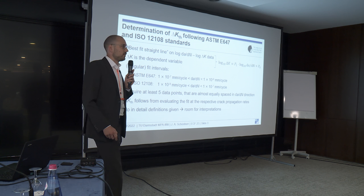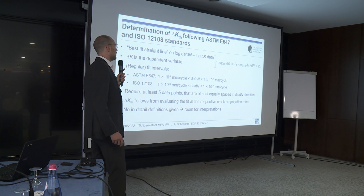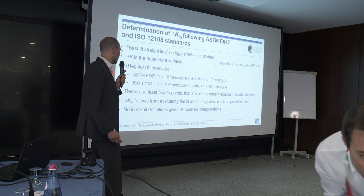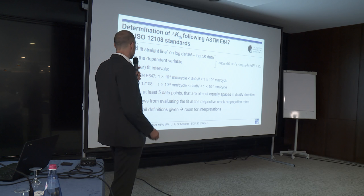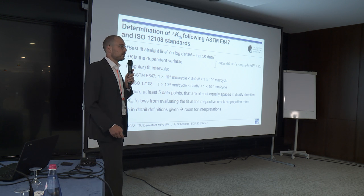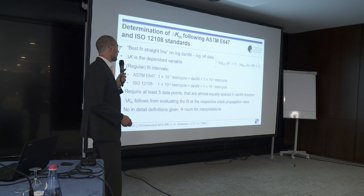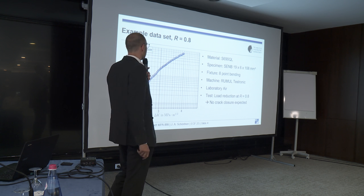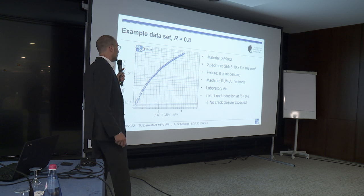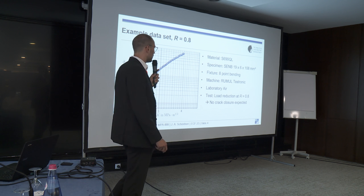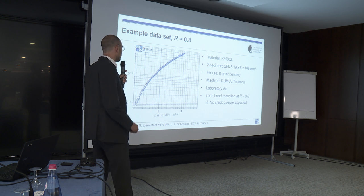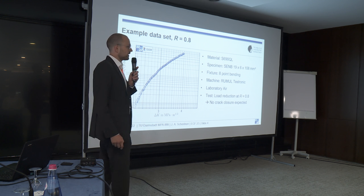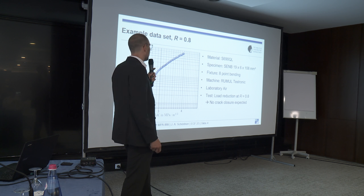Furthermore, they define that you need at least five data points that are almost equally spaced in the crack growth rate direction. To calculate the threshold stress intensity range, you evaluate the equation that follows from fitting. Since there's no precise definition of the method, there is plenty of room for interpretation. I'll motivate my studies using a fatigue crack growth curve obtained from structural steel using an 8-point bending on single-edge notch bending specimens tested in laboratory air at a constant load ratio of about 0.8.